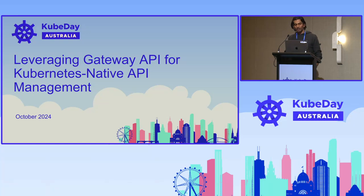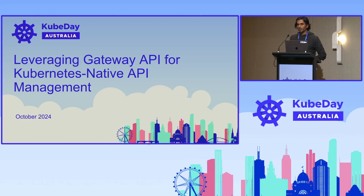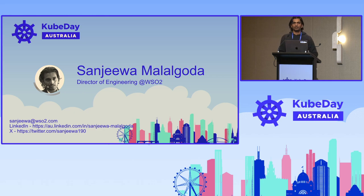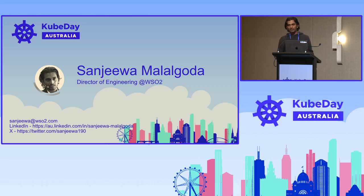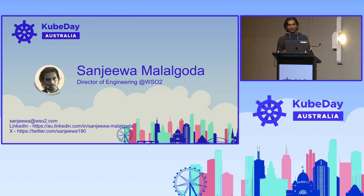Good morning, everyone. I would like to welcome you all for this session on leveraging Gateway API for Kubernetes native API management. My name is Sanjeev Mahavadu. I work as a product manager for WSO2 API Manager product. It's an API management solution which comes with the gateway and the full lifecycle API management platform. I started my career as a load balancer engineer and then moved to API management integration, so my experience is pretty much aligned with integration, API management, load balancing, API gateways. Recently, I worked on a project where we implement a Kubernetes native API management solution, and while working on that, I got the opportunity to work very closely with Gateway API for Kubernetes.